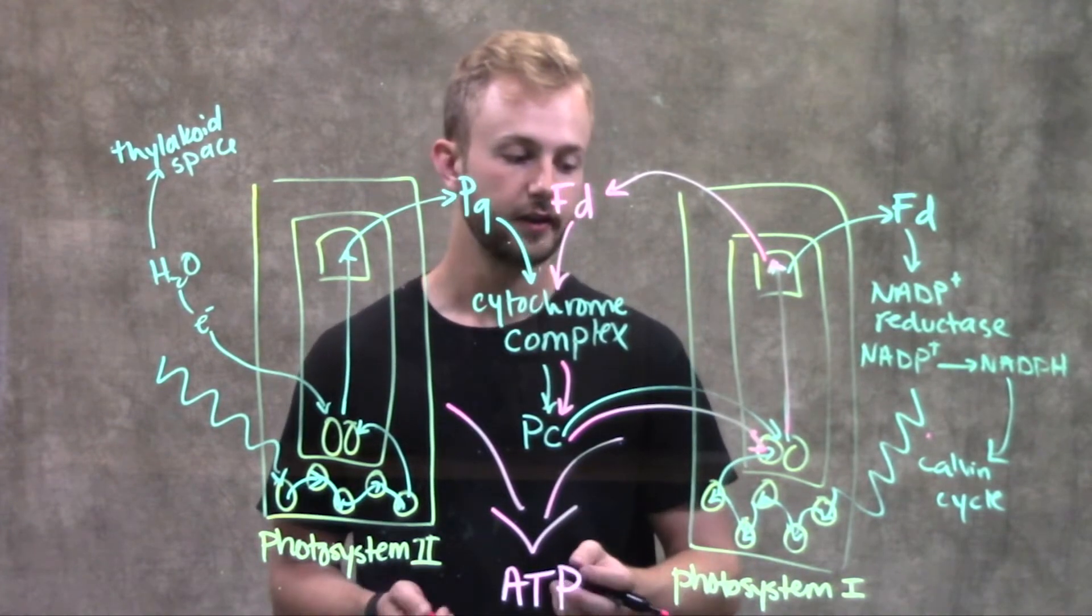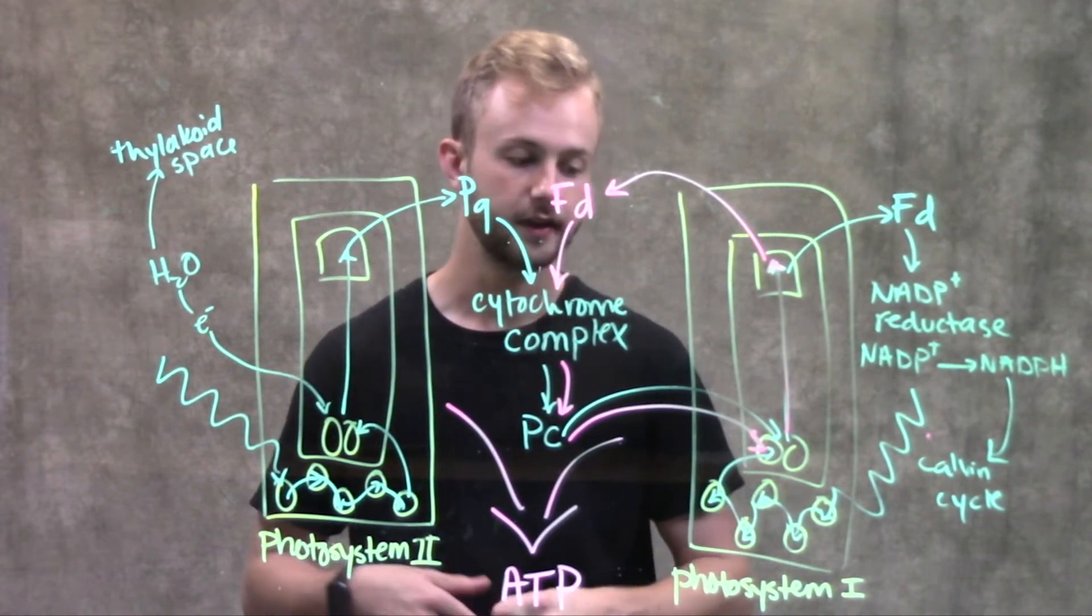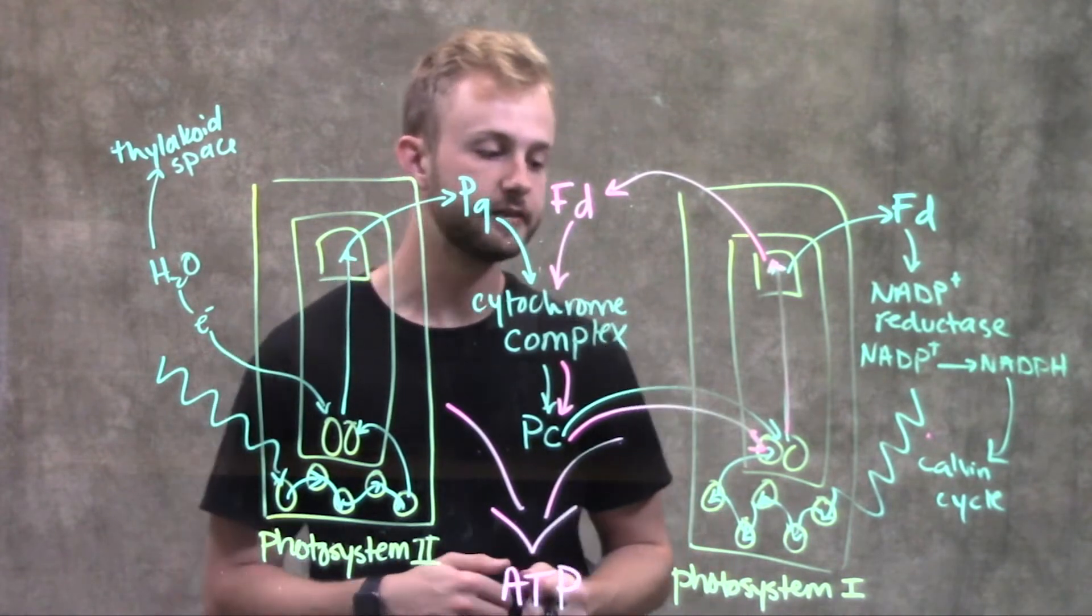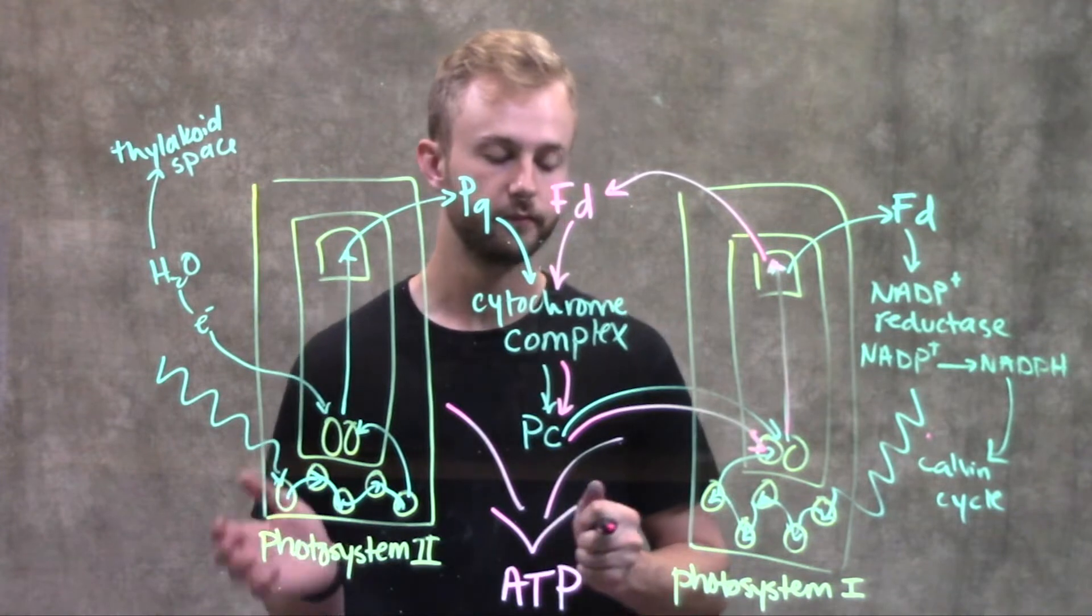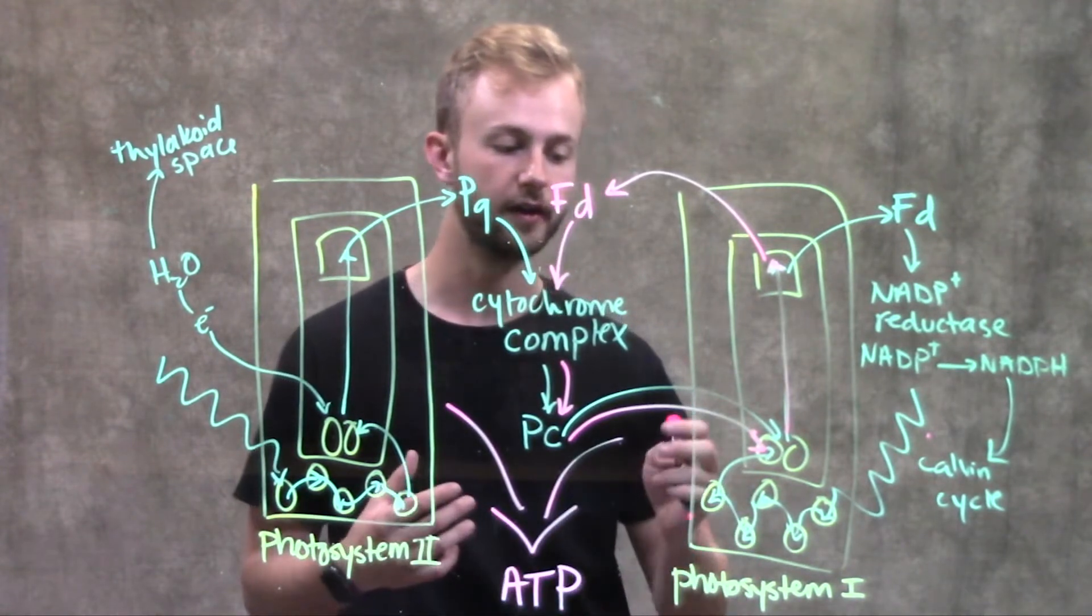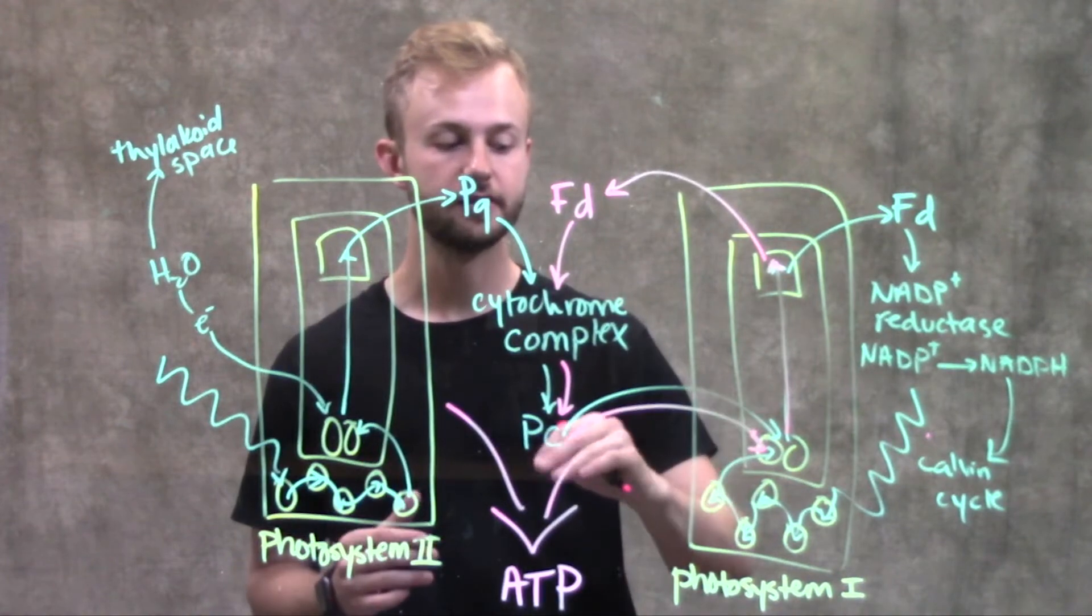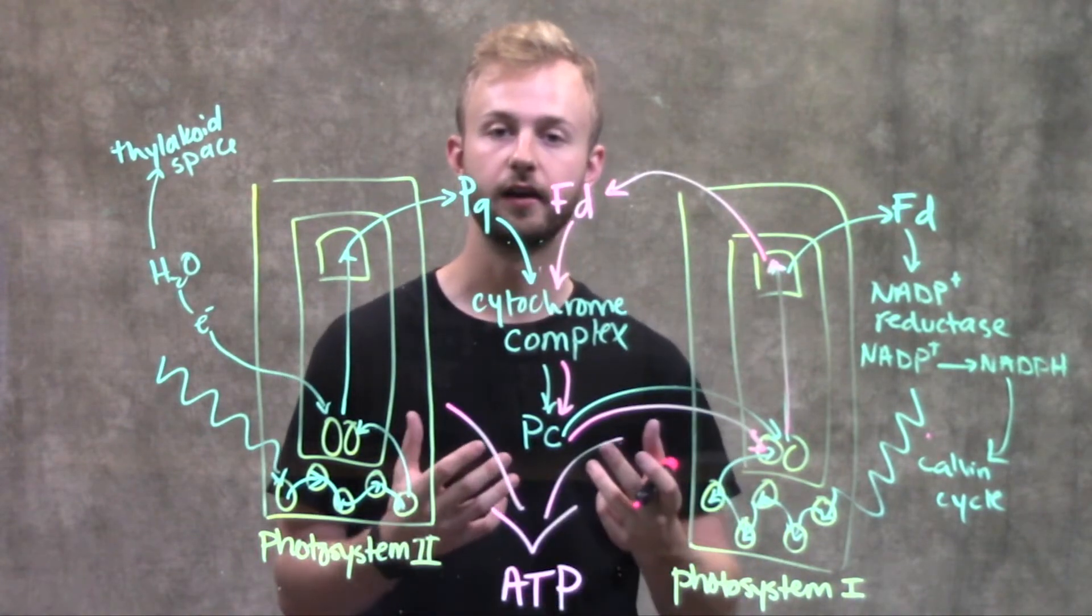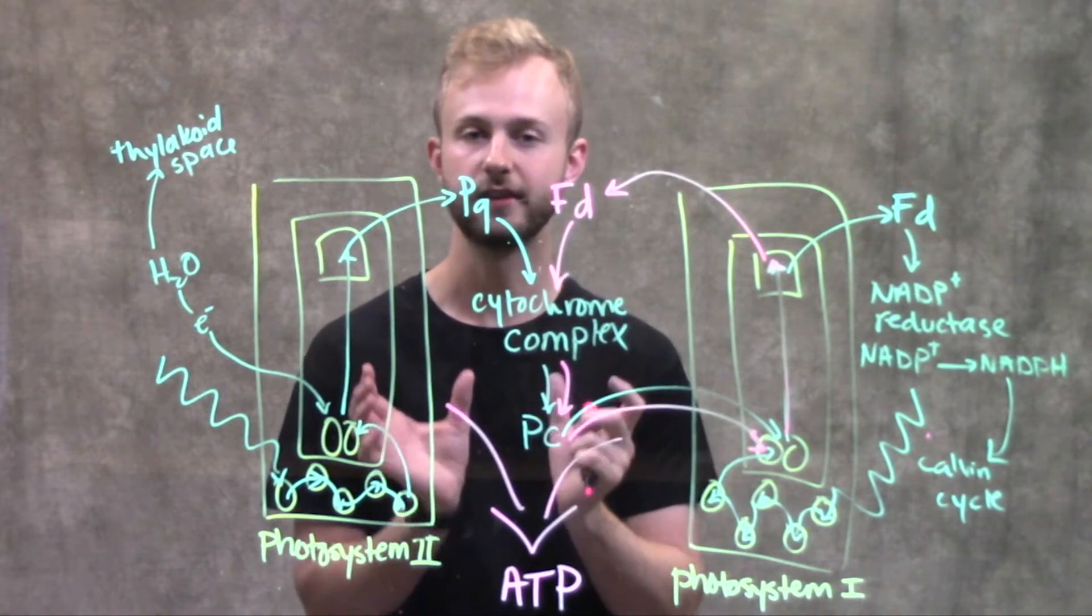Cyclic electron flow is found in some plant and photosynthetic species. It's not completely certain what the purpose is, but plants that don't have this cyclic electron flow grow poorly in very high intensity light situations.